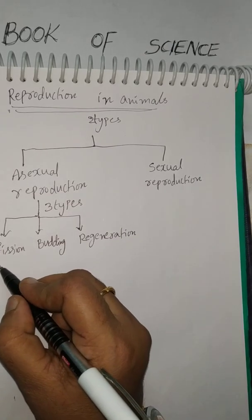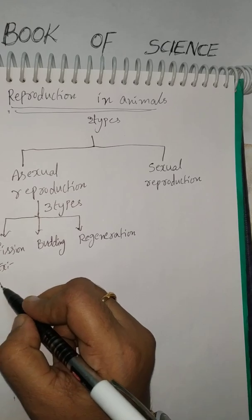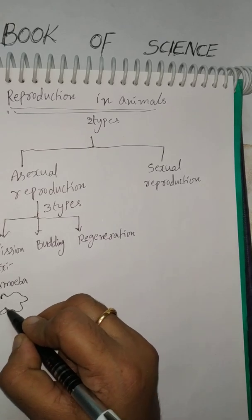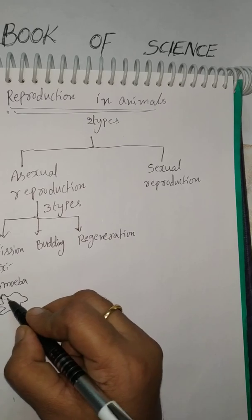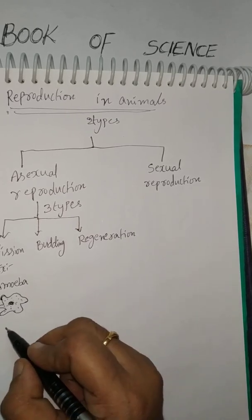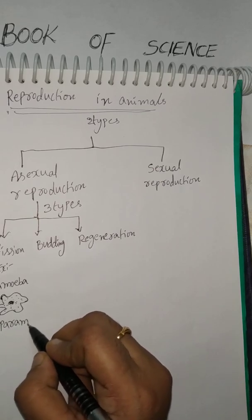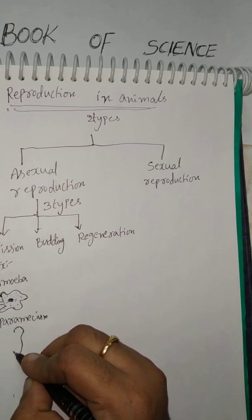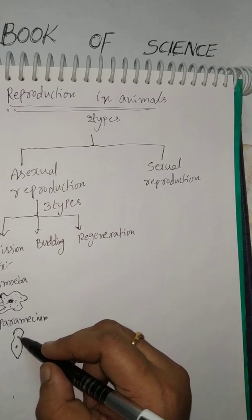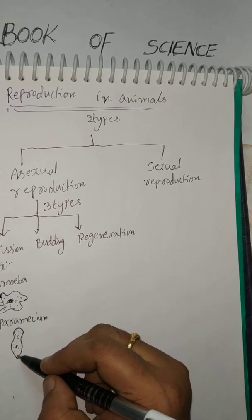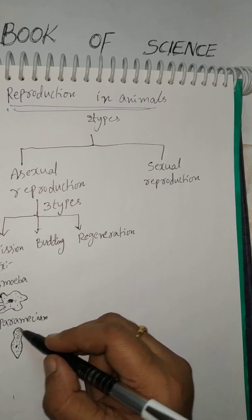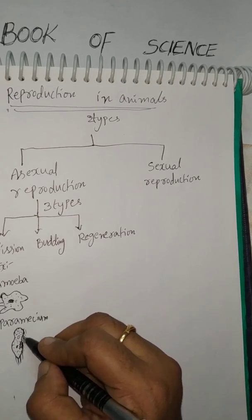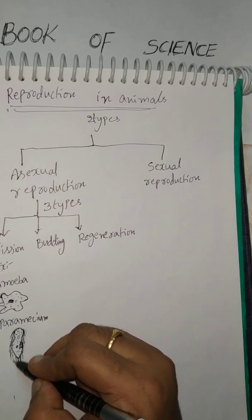Fission example: Amoeba. Amoeba has an irregular shape — here is the diagram of Amoeba. Another example is Paramecium, which is also called slipper animalcule because its shape is just like a slipper, so it is called slipper animalcule.